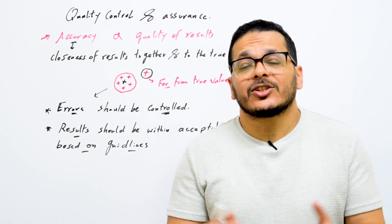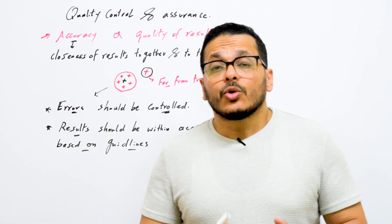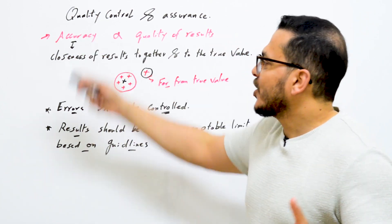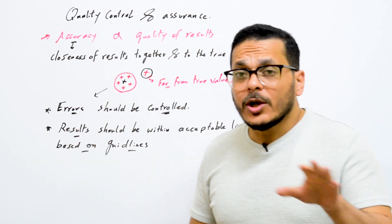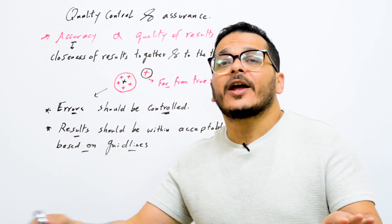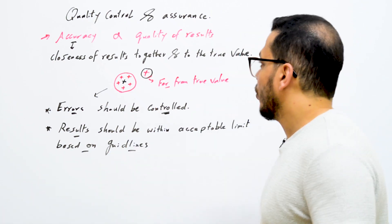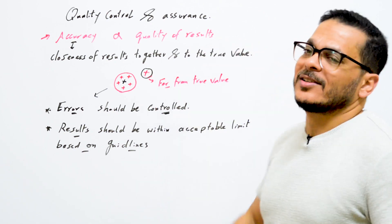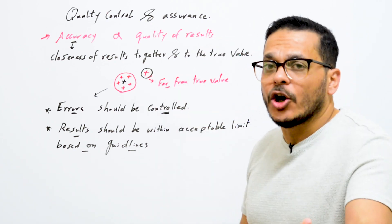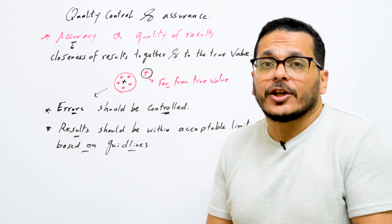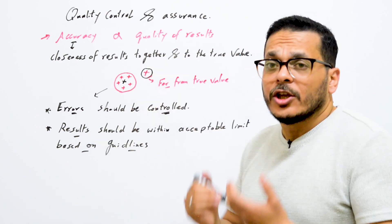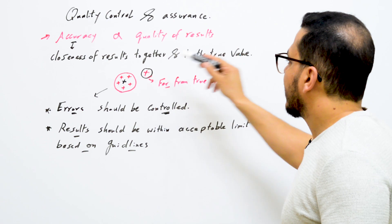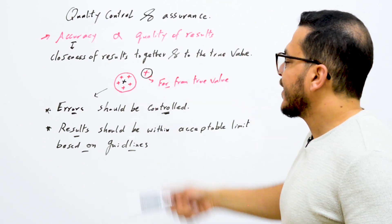You also need to ensure the competency of your lab analysts, so you need to ensure that your results are accurate. Accuracy is the closeness of results together and to the true value or expected value. Accuracy is equivalent to the quality of results — if accuracy is high, quality of results is high, and if accuracy is low, quality of results is low.